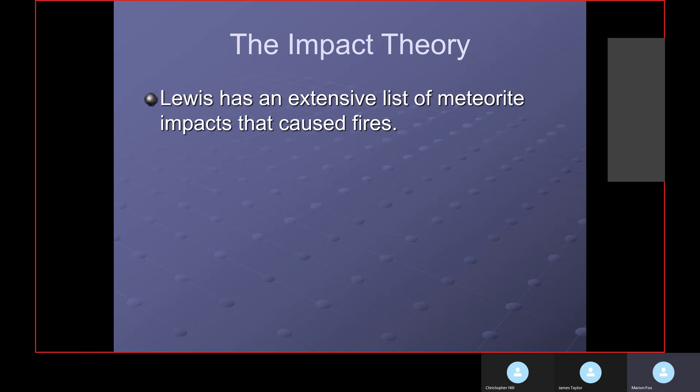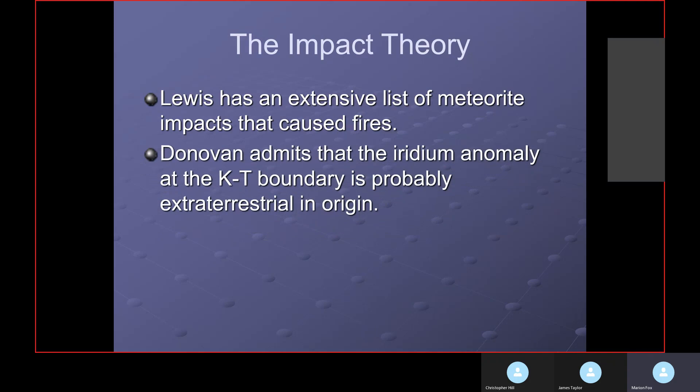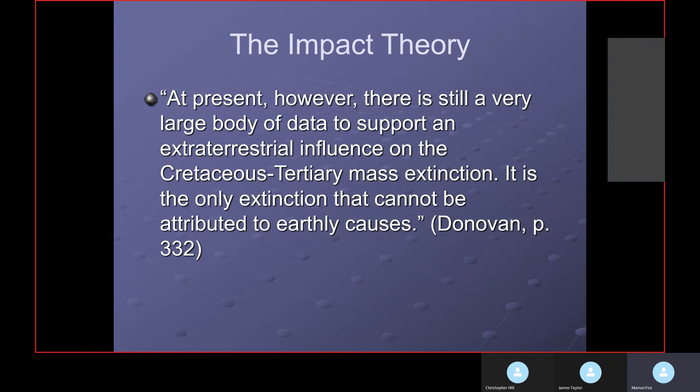The US has an extensive list of meteorite impacts that cause fires. Donovan admits that the iridium anomaly on the KT boundary is probably extraterrestrial. He claims it's probably from comets or meteorites. At present, Donovan says, there's still a very large body of data that supports an extraterrestrial influence on the Cretaceous tertiary mass extinction. They say there's an extinction of living organisms at that time. It's the only extinction that cannot be attributed to Earth, according to Donovan. He's a uniformitarian geologist and no doubt probably an atheist or an agnostic.